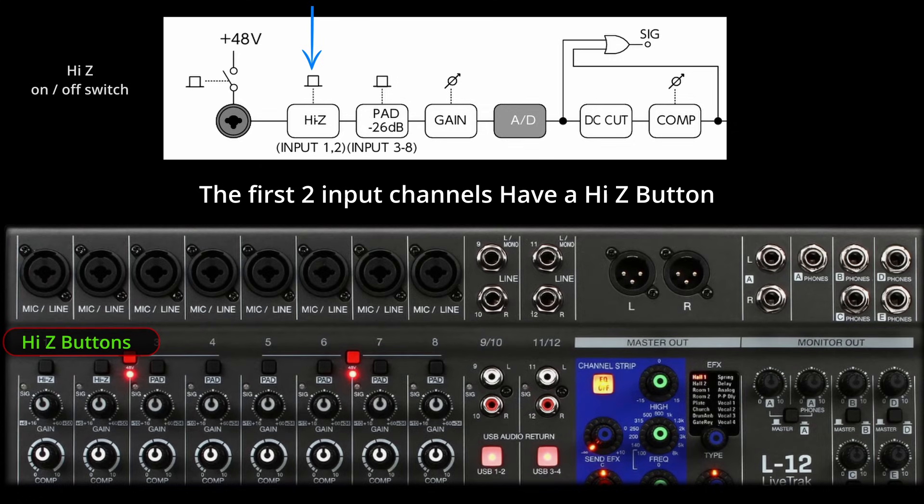Channels one and two on the mixer feature a High-Z button for direct connection of high impedance instruments like electric guitars and basses, which are designed for direct amp connection. If you have more than two high impedance instruments, use a DI (direct injection) box for the other channels without the High-Z button. Even active instruments with built-in preamps require either the High-Z button or a DI box for proper signal matching. Most effect pedals also require either the High-Z button or a DI box. For line level devices like keyboards and drum machines, keep the High-Z button off.